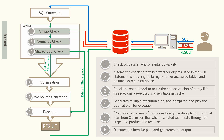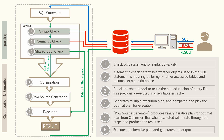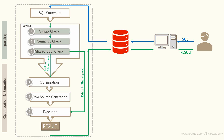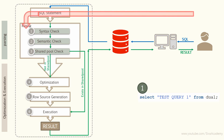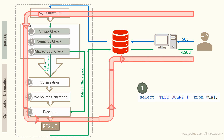Suppose a query is getting executed for the very first time — for example, 'Select test query one from dual.' Oracle starts with the syntax check, then the semantic check, then the shared pool check. Obviously Oracle will not find relevant information in the shared pool, so it proceeds to optimization, then row source generation, then execution. The result is sent back to the user.